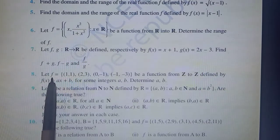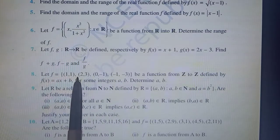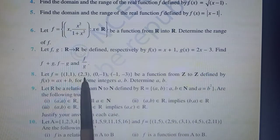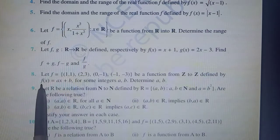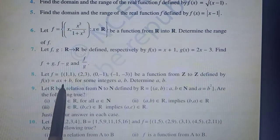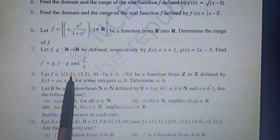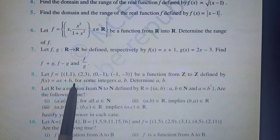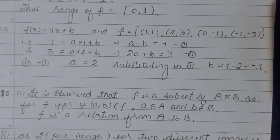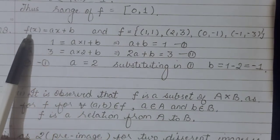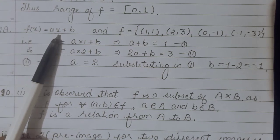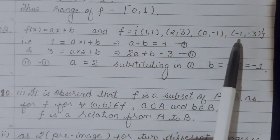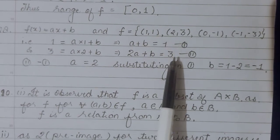They have given the function in form of ordered pairs - four ordered pairs belonging to f. This function is from Z to Z (integers). The function has been defined as f(x) = ax+b, so the image y (second entry) would be a times the first entry plus b. They ask you to find the unknowns a and b.